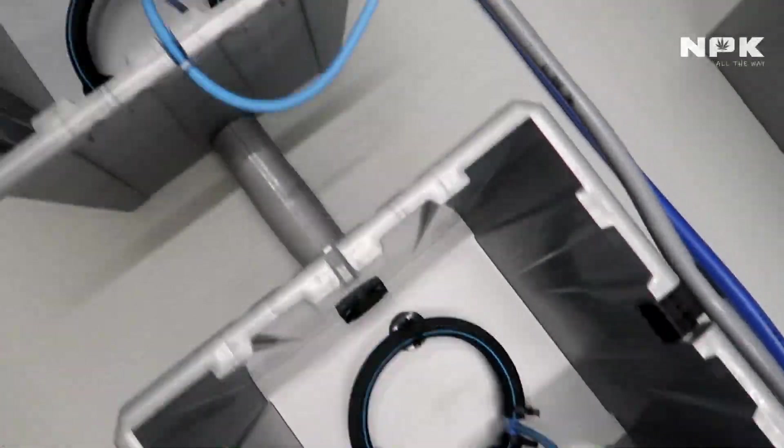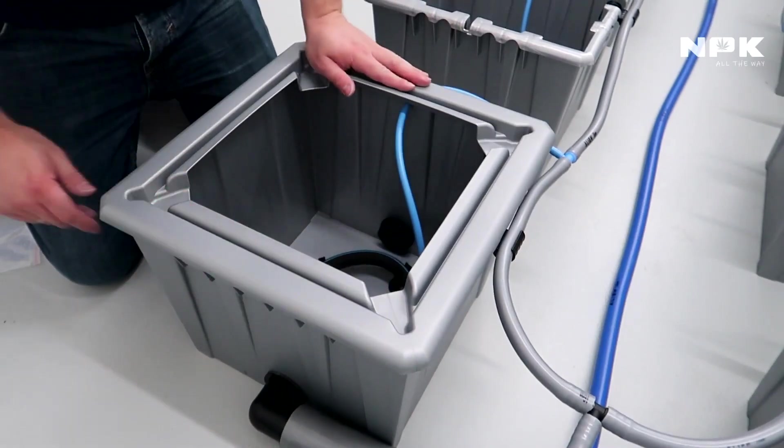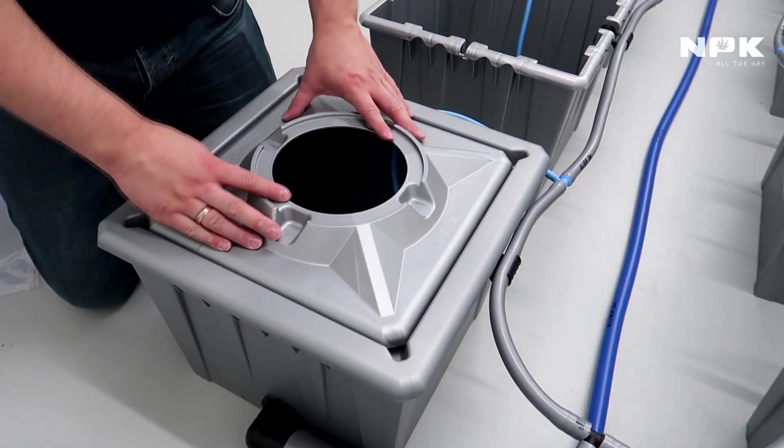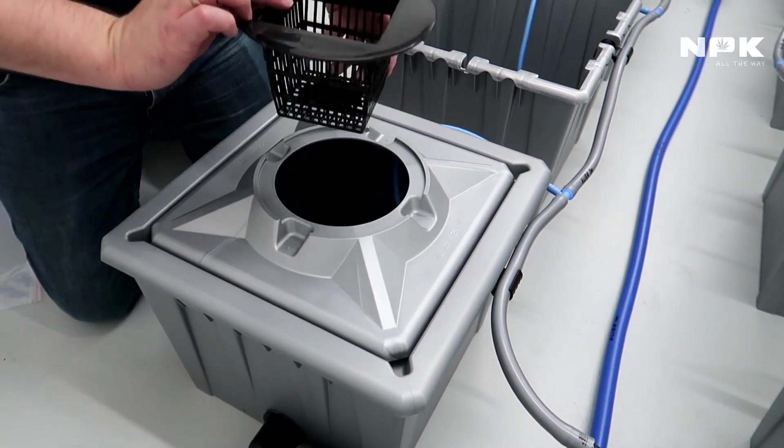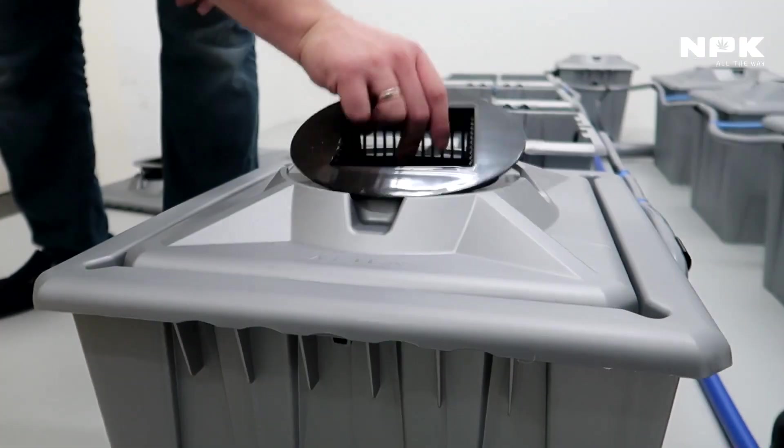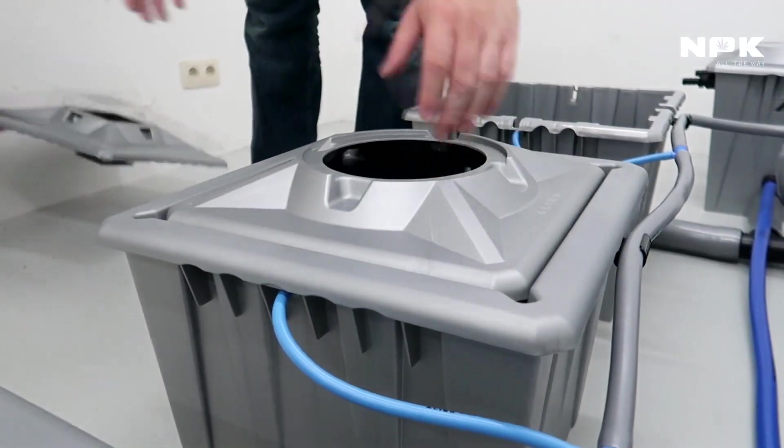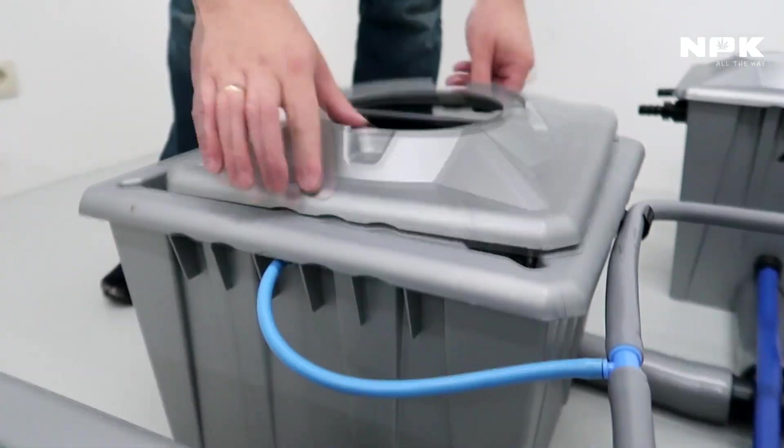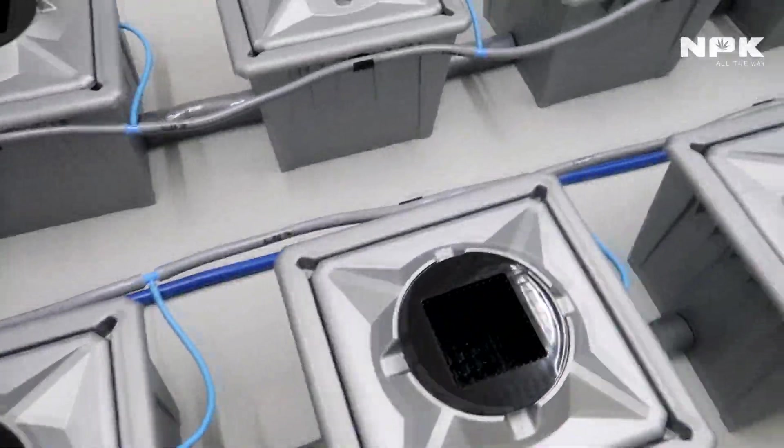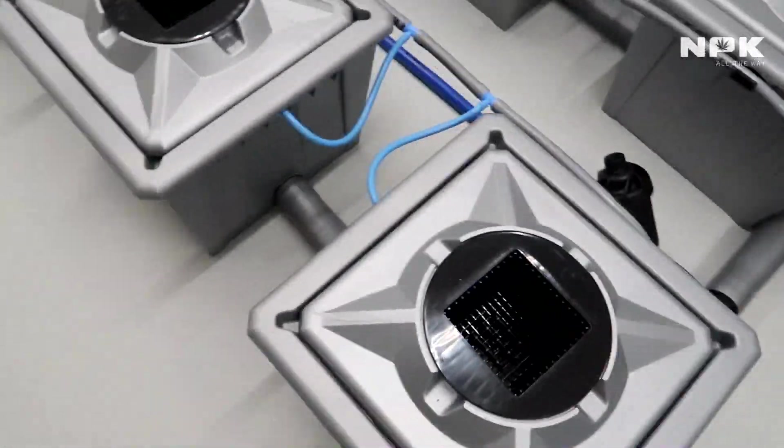Here we're going to put on the lids. It's a three-part system, so a main lid, then we have a topper, and last but not least we have our basket where the plant goes in. That all said and done, this is the system finally after everything has been set up. Looking very clean, I like the way it looks.